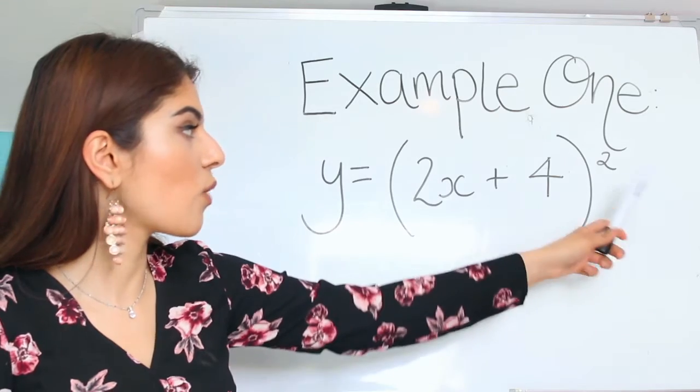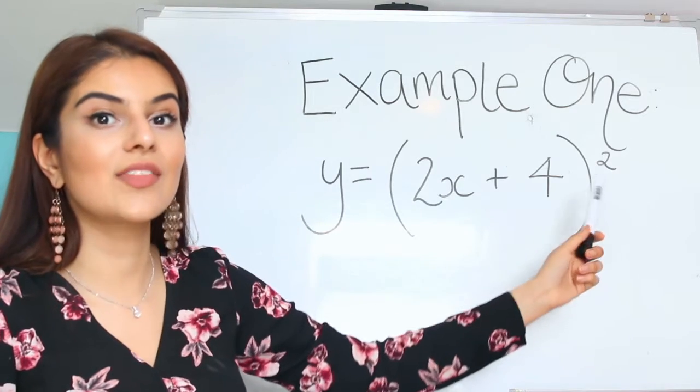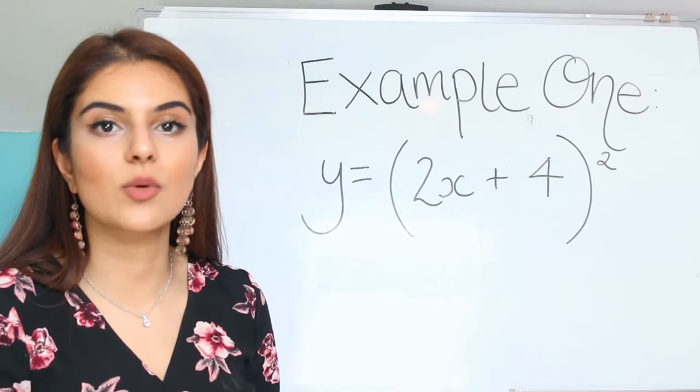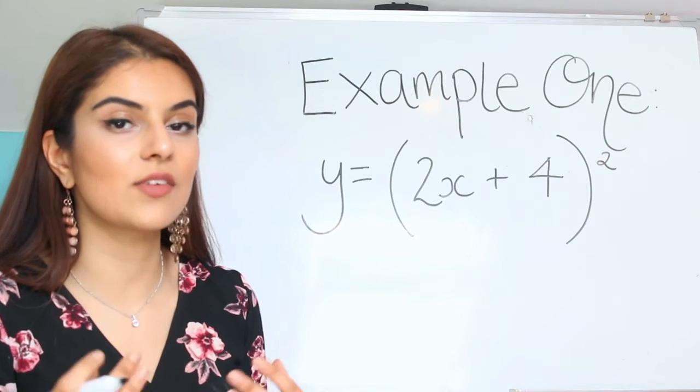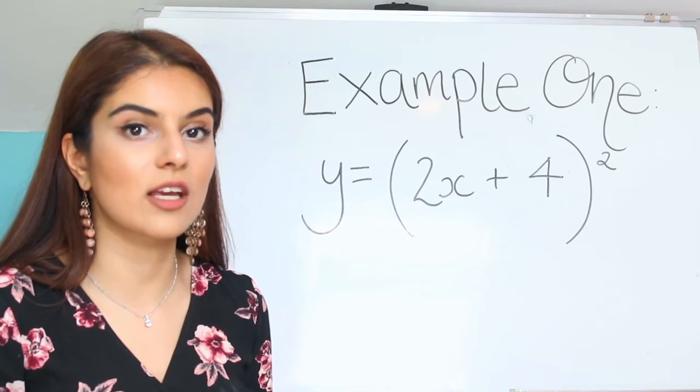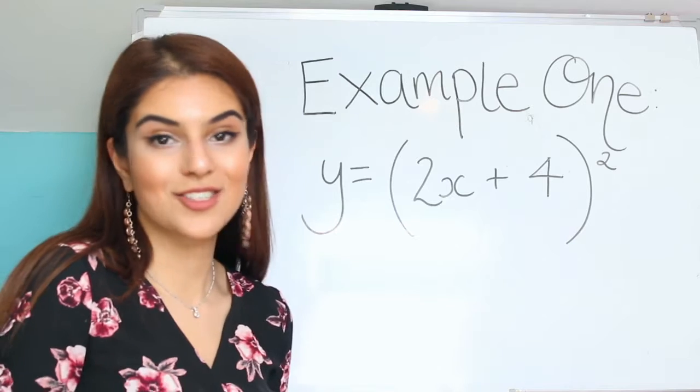Outer layer would be the squared and the inner layer would be the 2x plus 4. What we do is differentiate the outer layer, leaving the inner layer the same, and then we would differentiate the inner layer. So let's go through it then.